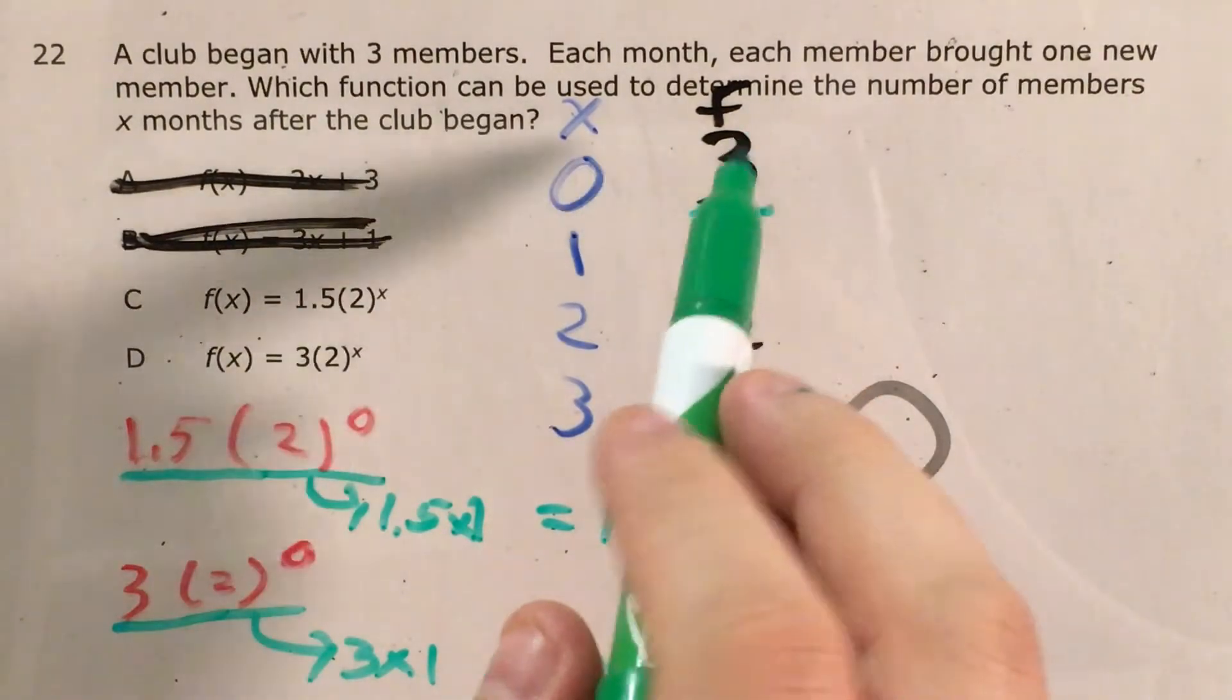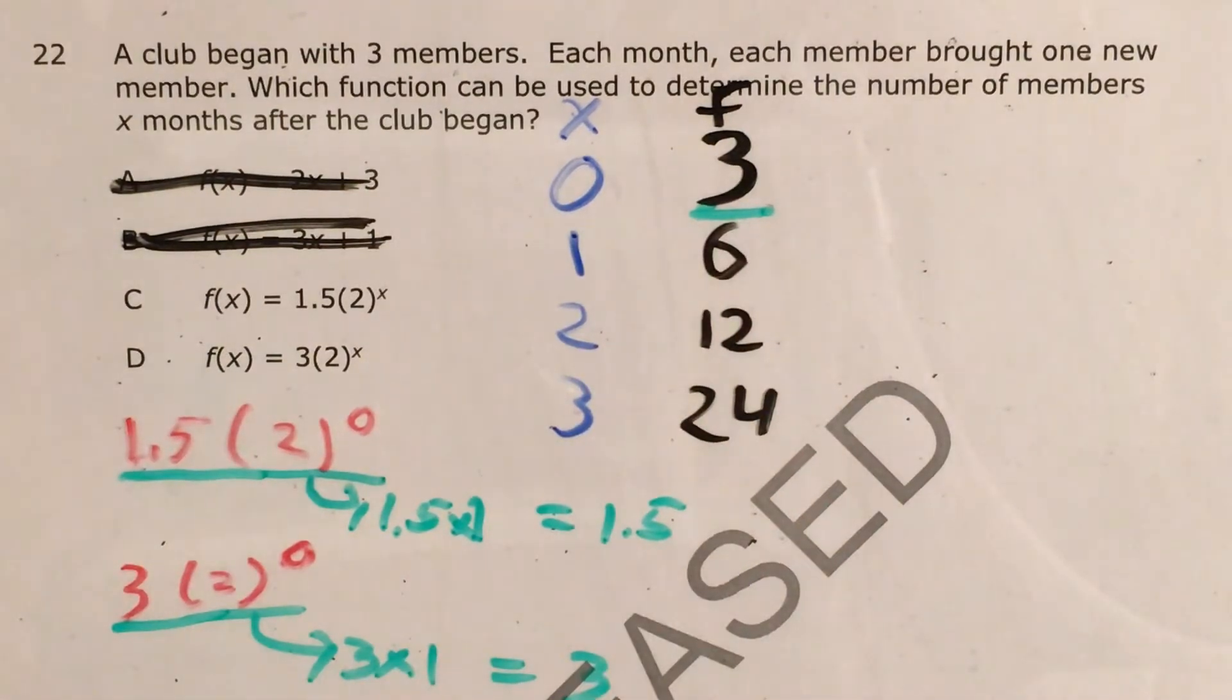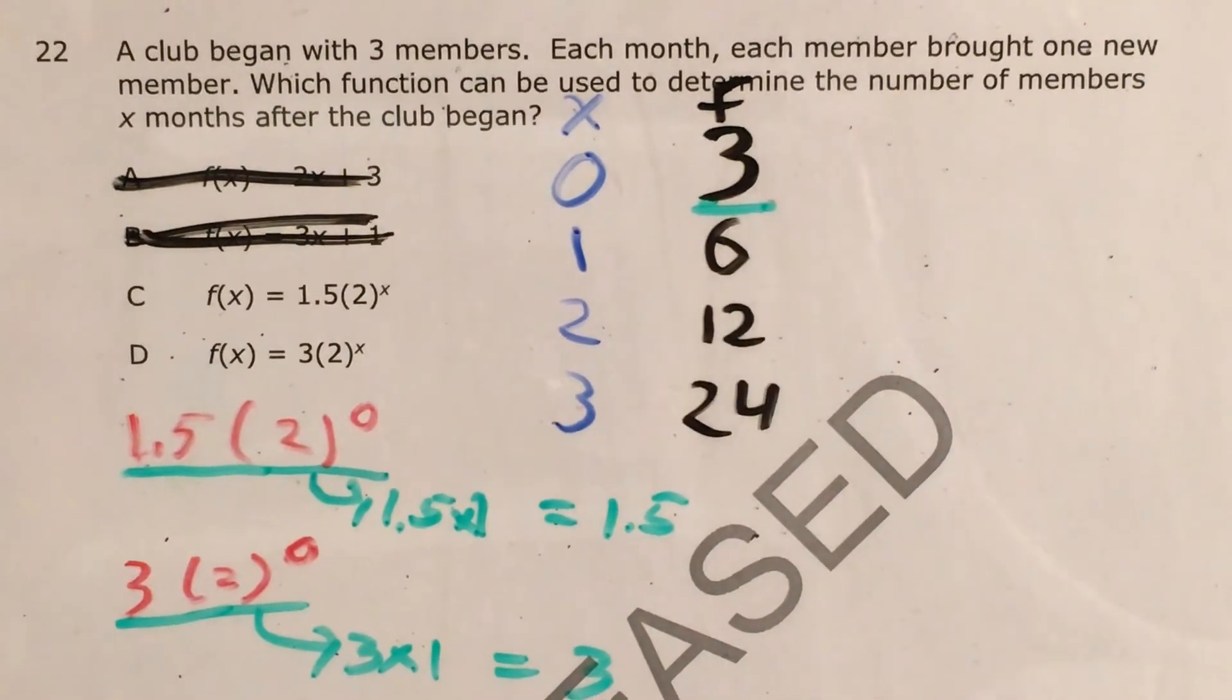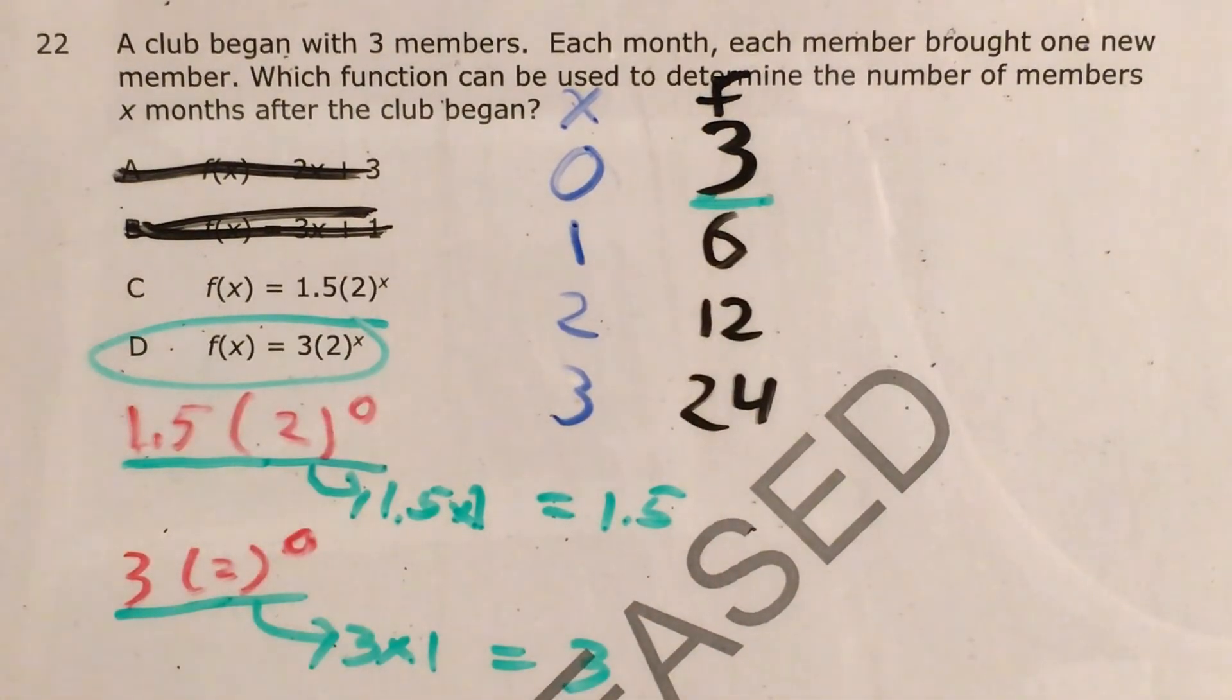This is what we were expecting, because when the club first began, there were three members, not one and a half members. I don't think you can really have half a member of something. But either way, using these properties of exponential functions and translating this word problem, our best answer is choice D.